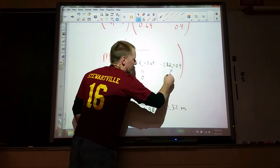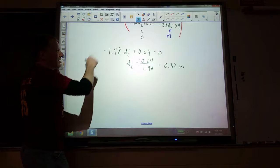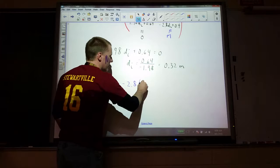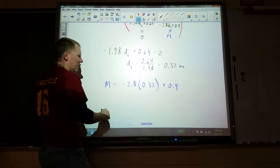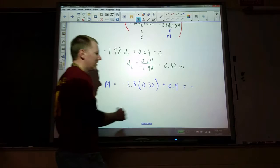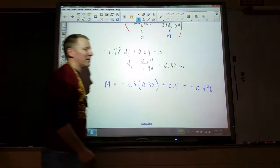Okay, so that's this part. This term is equal to the magnification. And we now know the DI to put in there. So our magnification is negative 2.8 times 0.32 plus 0.4. I'm getting negative 0.496.